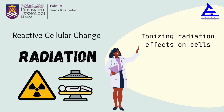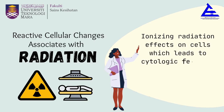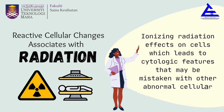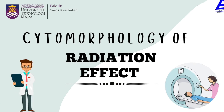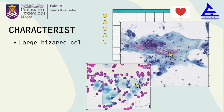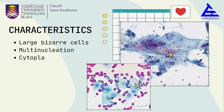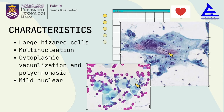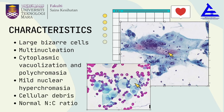Finally, reactive cellular changes associated with radiation: ionizing radiation effects on cells lead to cytologic features that may be mistaken for other abnormal cellular changes. In the acute phase — changes occurring within 14 days of radiotherapy — characteristics include large bizarre cells, multinucleation, cytoplasmic vacuolation and polychromasia, macronuclear hyperchromasia, cellular debris, and normal NC ratio.